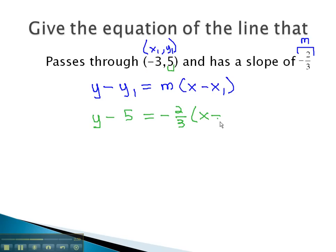Subtracting a negative 3 would be the same as adding a positive 3, and so we get the equation y minus 5 equals negative 2 thirds times x plus 3. This is the equation of the line that passes through negative 3, 5, and has a slope of negative 2 thirds.